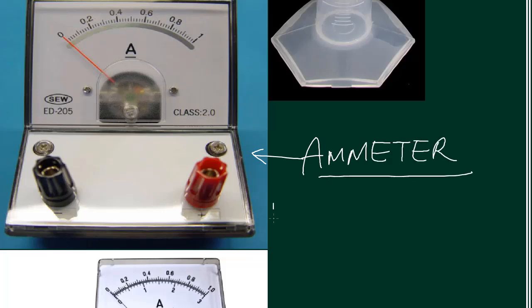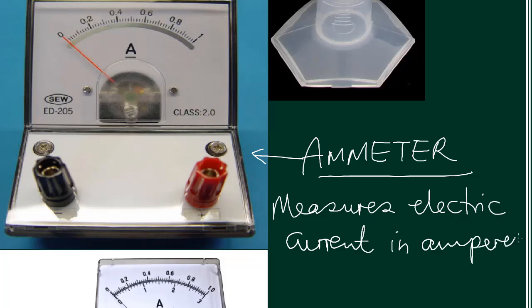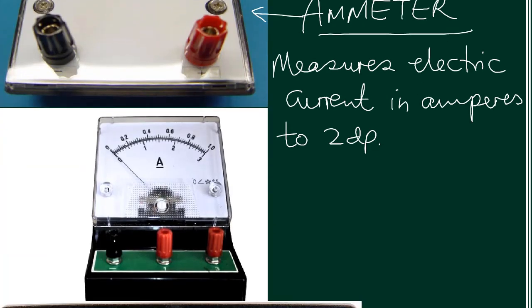Then we have an ammeter. This one measures electric currents in amperes to two decimal places. The list count is 0.02, so the values should be even.